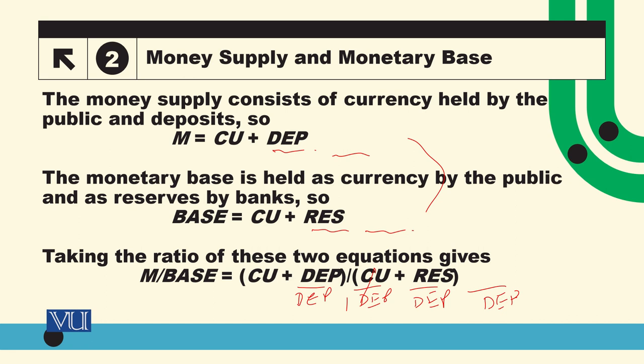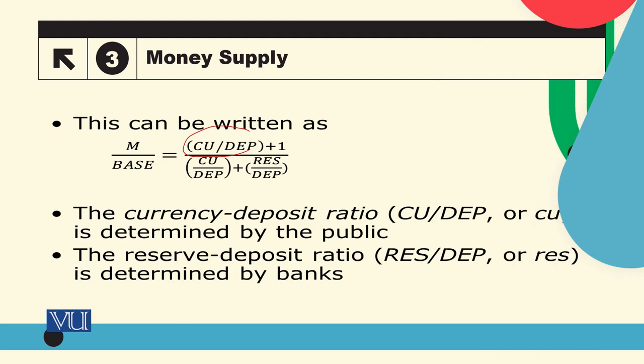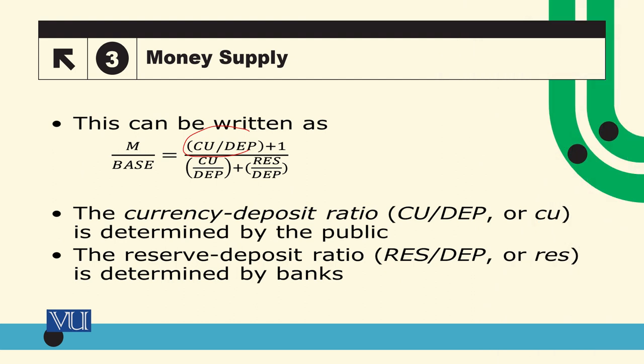Taking the ratio of these two equations — if we take the ratio of both equations — M divided by Base on the left-hand side, and on the right-hand side, currency plus deposits divided by currency plus reserves. If we then divide the right-hand side through by deposits DEP, we get the simplified form of the money multiplier equation.